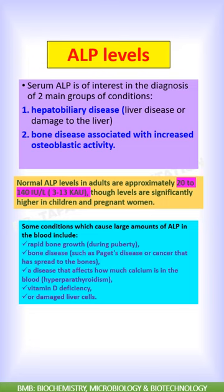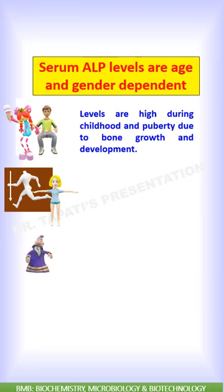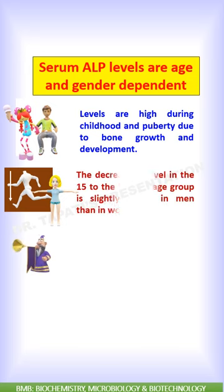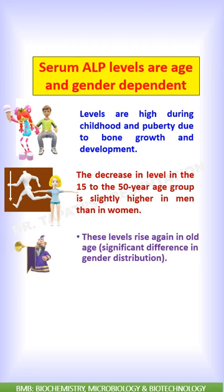Normal ALP levels in adults are approximately 20 to 140 IU per liter. Serum ALP levels are age and gender dependent. Levels are high during childhood and puberty due to bone growth and development, then decrease in the 15 to 50-year age group, and are slightly higher in men compared to women. These levels rise again in older adults.